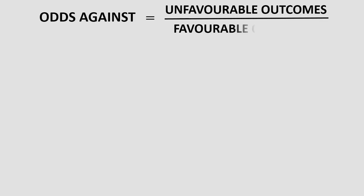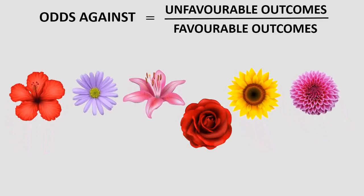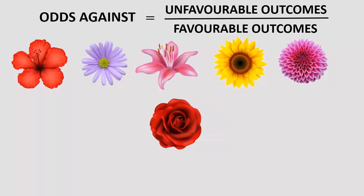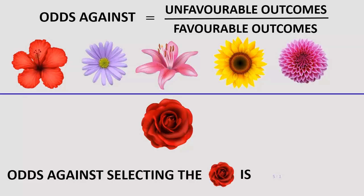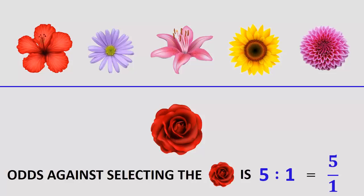What are the odds against randomly selecting the rose? Odds against is the ratio of unfavorable outcomes to the favorable outcomes. Odds against selecting the rose is 5 is to 1, that is 5 by 1. This time the other flowers are in the numerator and rose would be in the denominator.